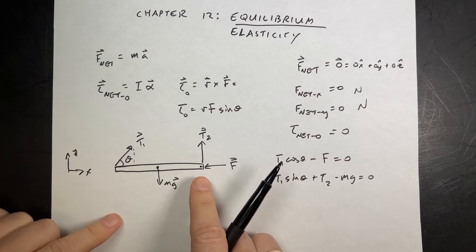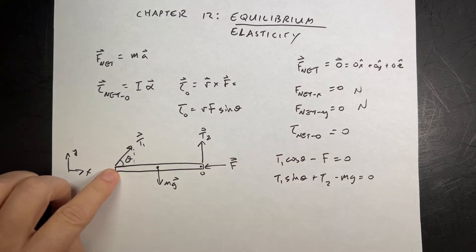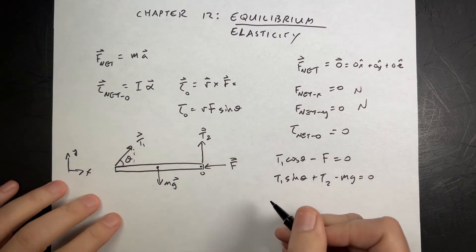Now, it depends on what you want to solve for. If I want to solve for f, I have it in this equation, so I could pick this as my point, o. You could pick this as your other point, and that way you don't have to deal with the angle. So, it's up to you, though.